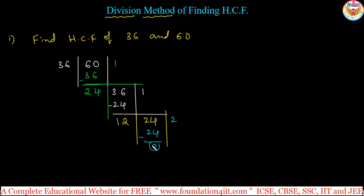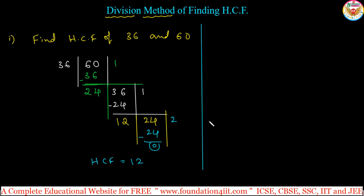Continue the steps until you get remainder 0. After getting 0, the last divisor is 12. The last divisor itself is the HCF. So the highest common factor is 12. HCF of 36 and 60 is 12. You can use this division method instead of listing factors.